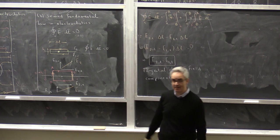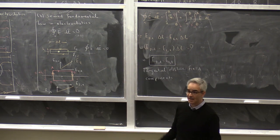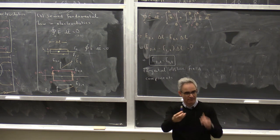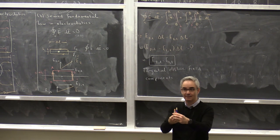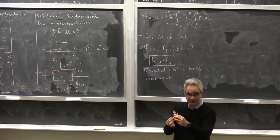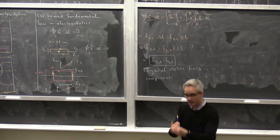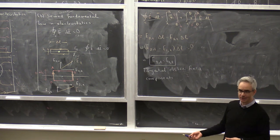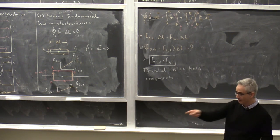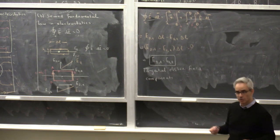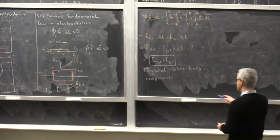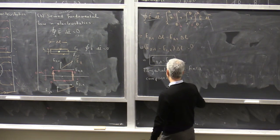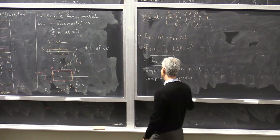This is similar to the continuity of magnetic flux in that it is unconditional. For example, if you have a resistor, the tangential electric field giving rise to the voltage remains continuous across the interface—whether you measure on the air side or the material side. Tangential electric field components across interfaces are unconditionally continuous.